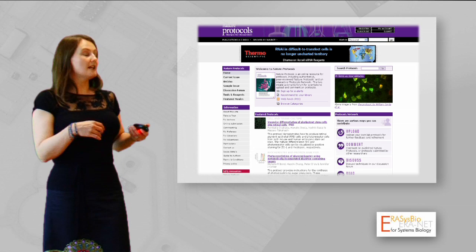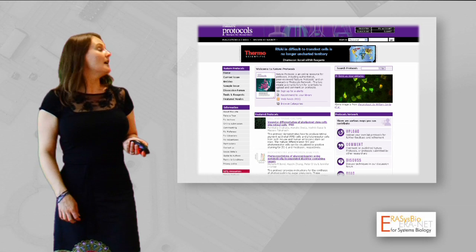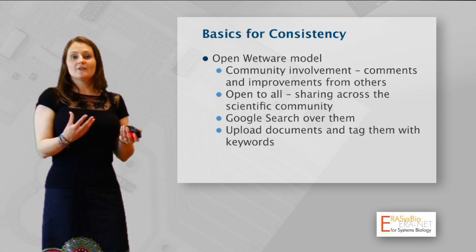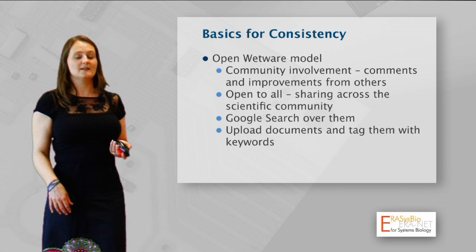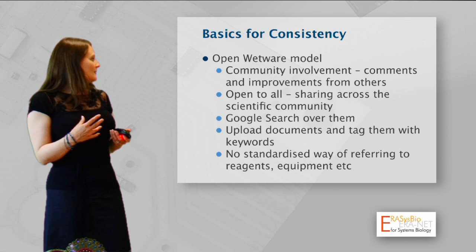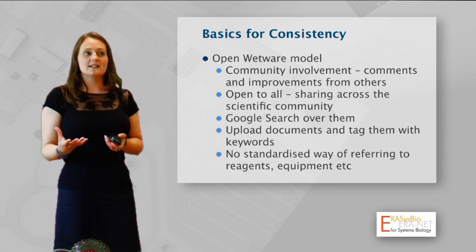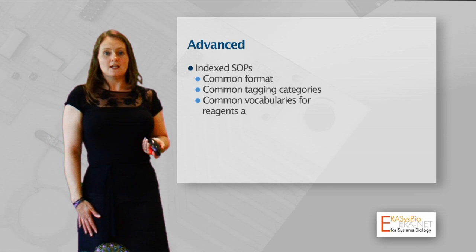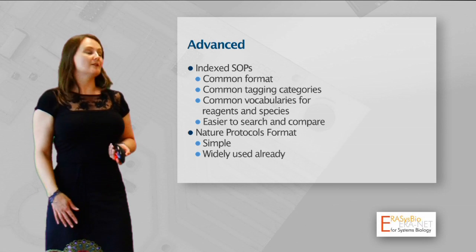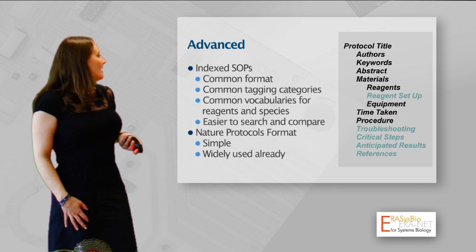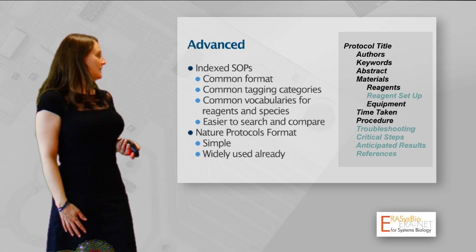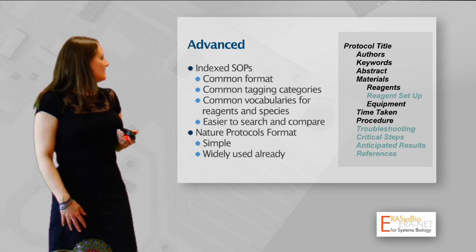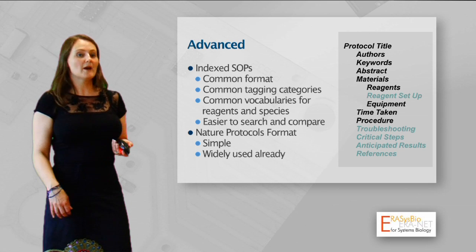This is a screenshot of Nature Protocols. As you can see, it's much more formal and structured. With the Open Wetware model you get added value from the community and can find things by simple searching and tagging mechanisms. But there's no standard way of referring to reagents or equipment, so it's quite easy to get lost and not understand when two protocols are actually talking about the same things. With the Nature Protocols format, you have a specific structure that people follow every single time — the things outlined in pale blue are optional features, but every other document will have all the different parts to it. So it's much easier to find things and to compare Nature Protocols SOPs.